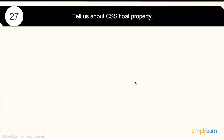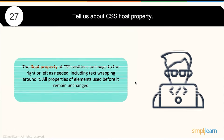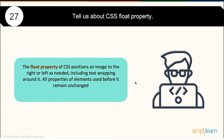Tell us about the CSS float property. The CSS float property is about positioning an image to the right or left as needed, typically including text wrapping around it. All properties of elements used before the float remain unchanged. That is what the float property is.